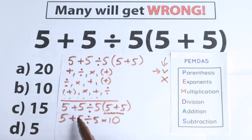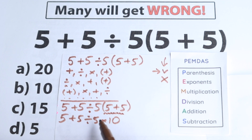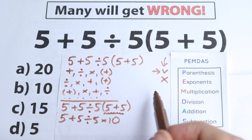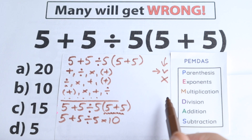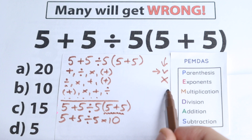For example, imagine you have 5 cubed — you would need to raise it, which is really complicated. But since we don't have any exponents, we skip this part and go to the next step: multiplication and division.